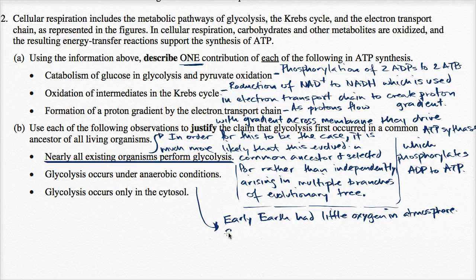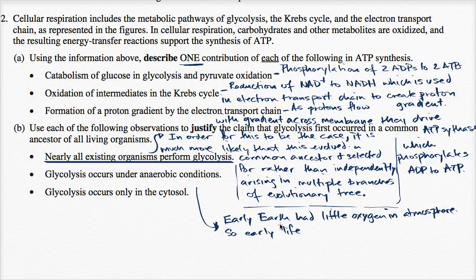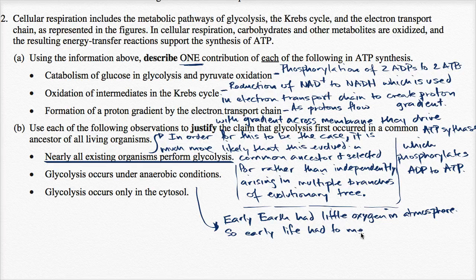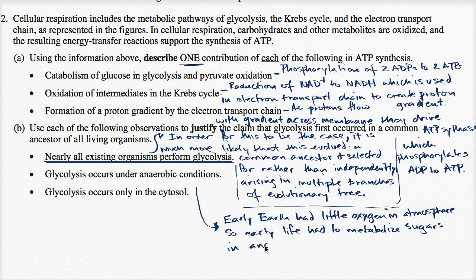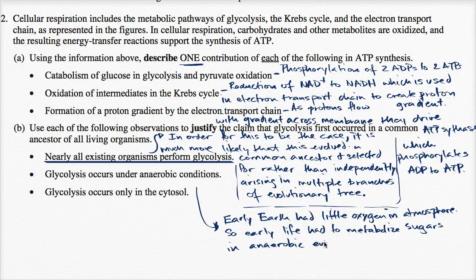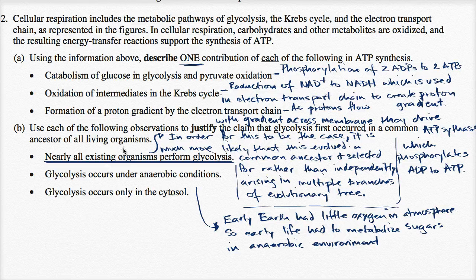Early life had to metabolize sugars or carbohydrates in anaerobic environment. So that seems to, once again, justify the claim that glycolysis first occurred in a common ancestor of all living organisms.